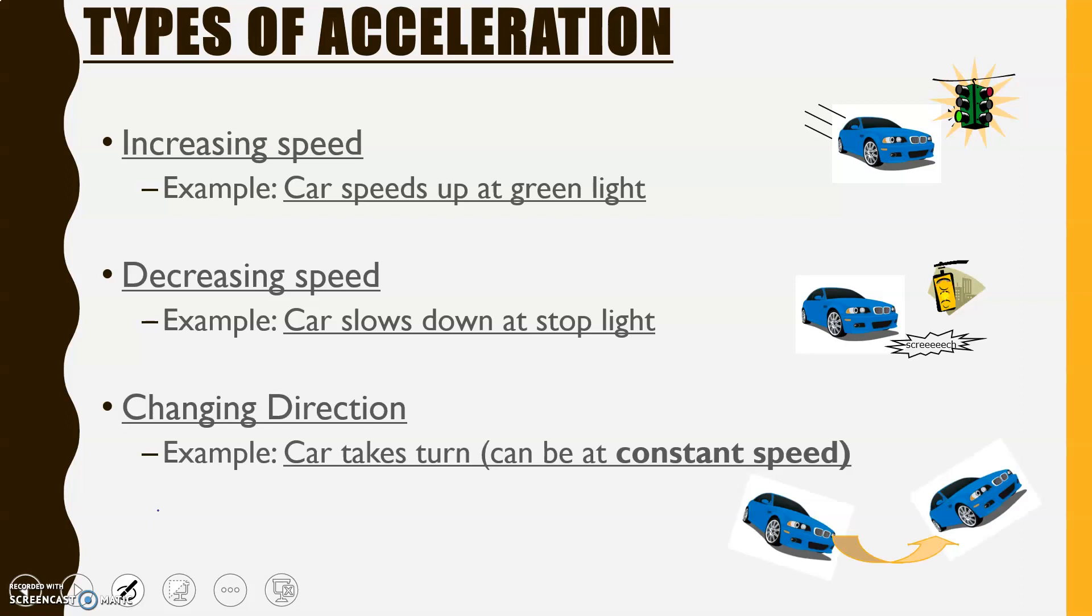And changing direction, so a car taking a turn. So remember, even if you're changing direction, you could be changing direction at a constant speed. So meaning, constant speed of, it could be 5 meters per second, it could be 50 meters per second.